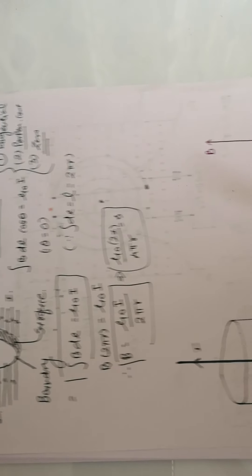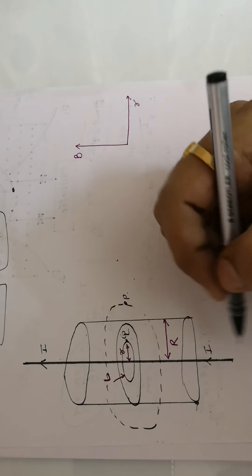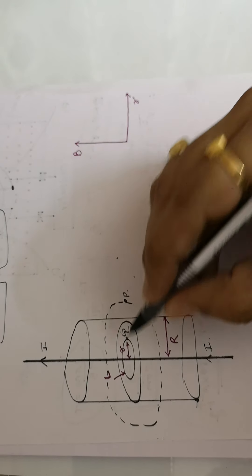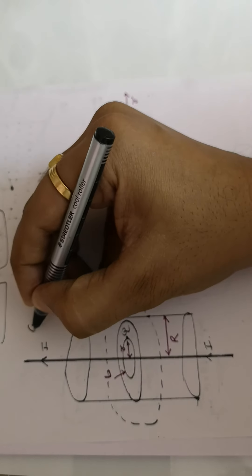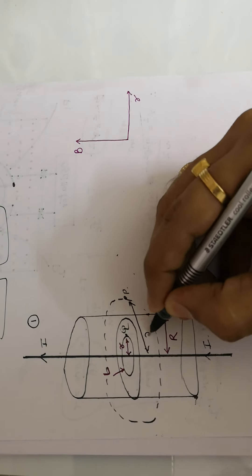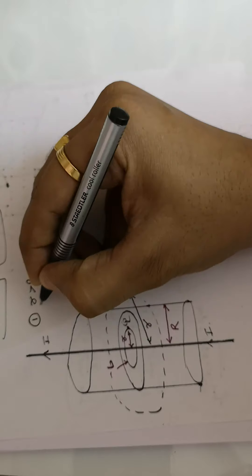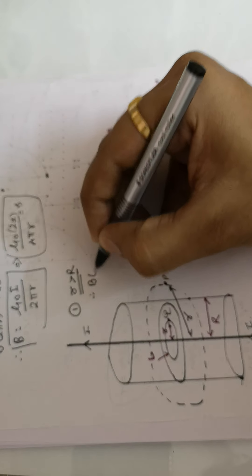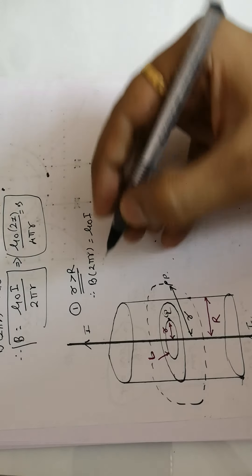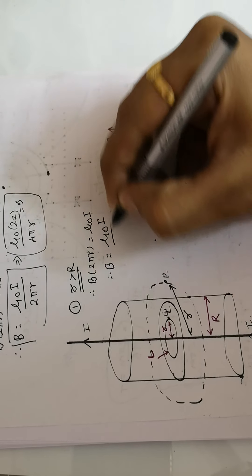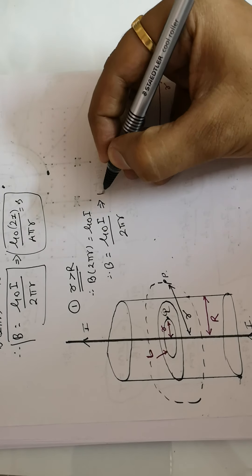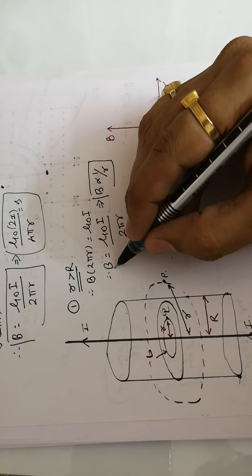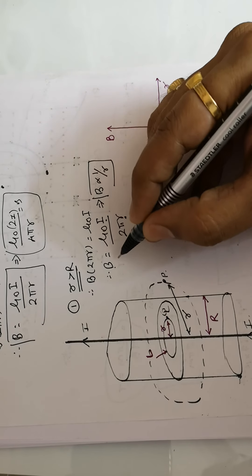To better understand Ampere's circuit law, consider a cylindrical wire through which current is passing. There is a point P at distance small r from the axis, and the wire has radius capital R. First, assume small r is greater than capital R — the point is outside the wire. Applying Ampere's law: B times 2 pi r equals mu zero times I, giving B equals mu zero I divided by 2 pi r. As distance increases, magnetic field decreases.